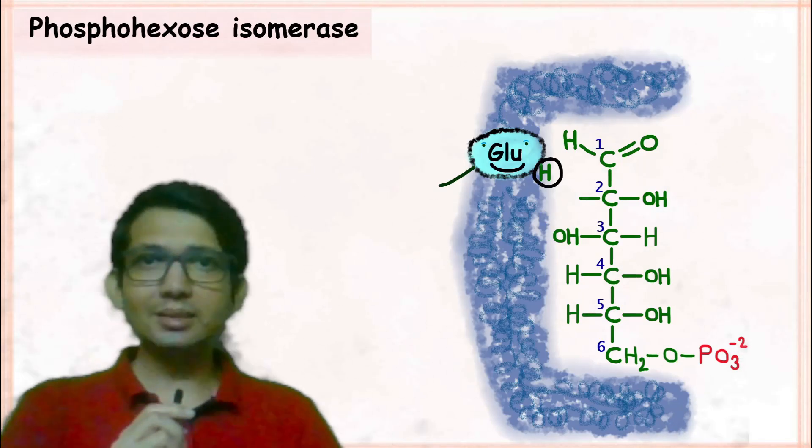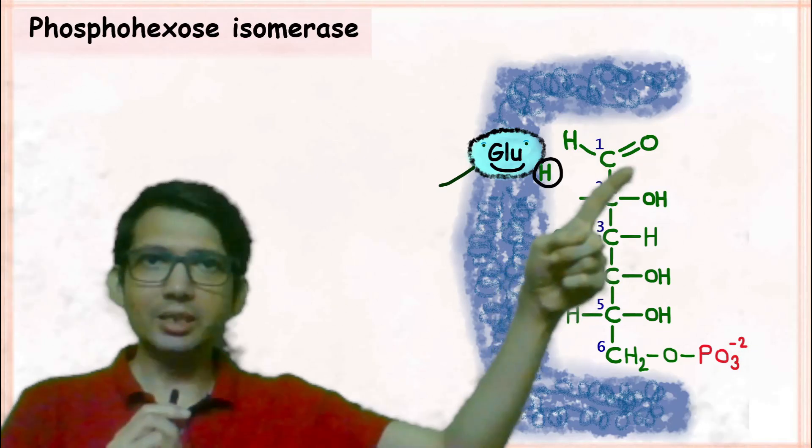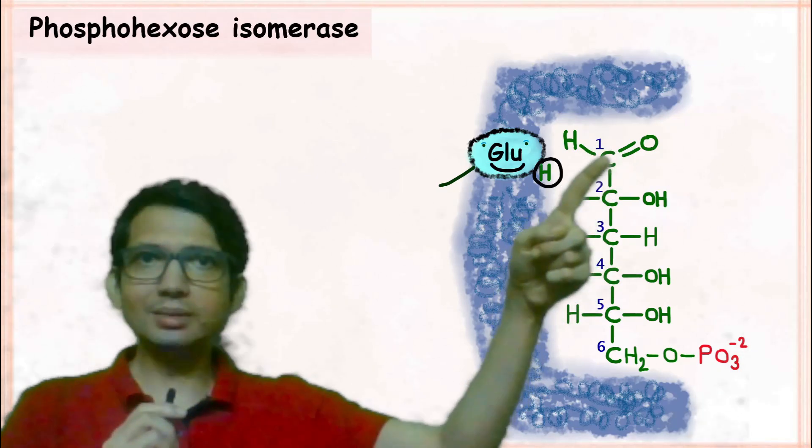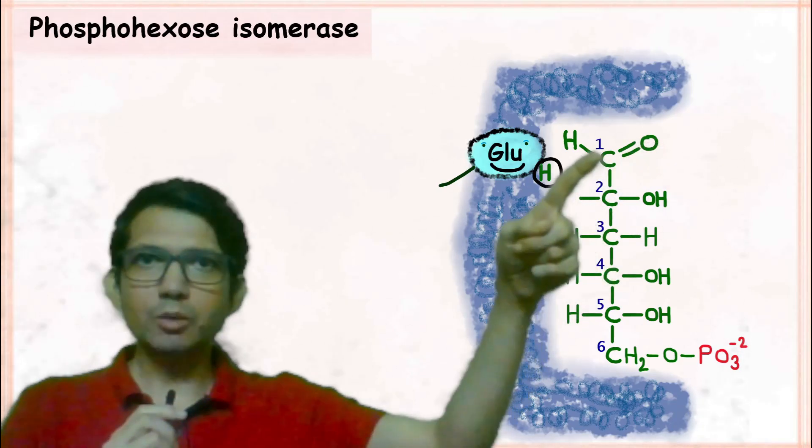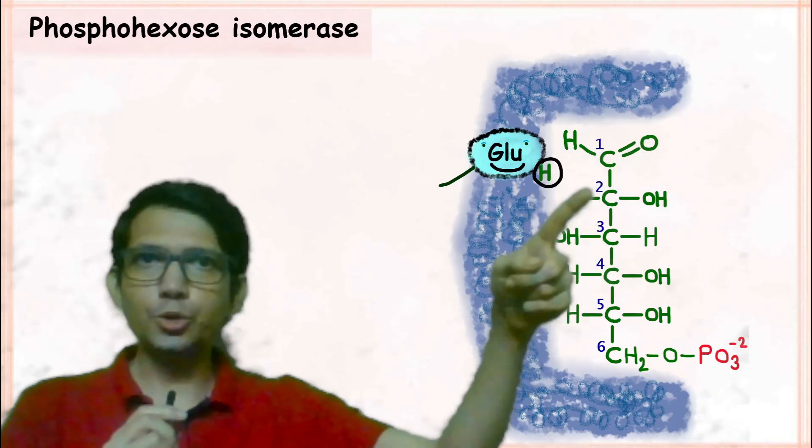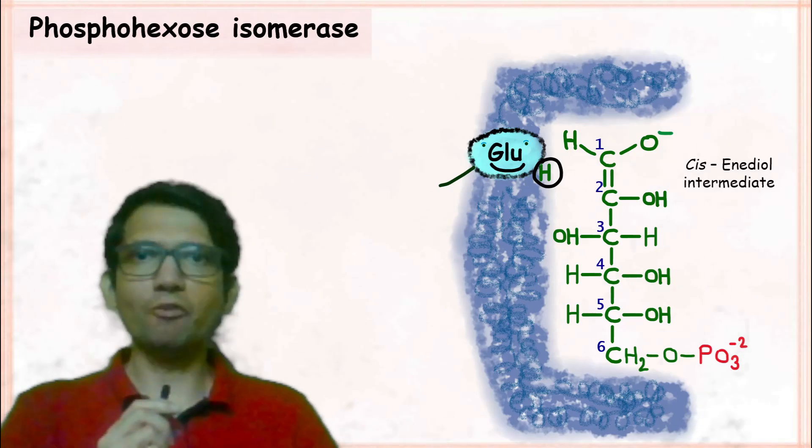Since the hydrogen from C2 carbon is lost, the double bond which is in between C1 and oxygen now shifts between C1 and C2. This results in formation of an intermediate.